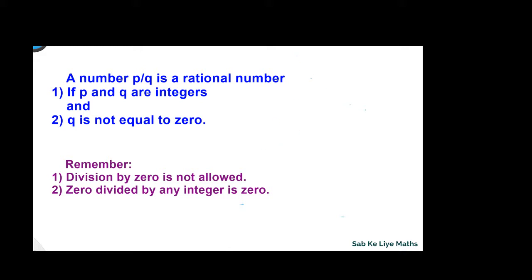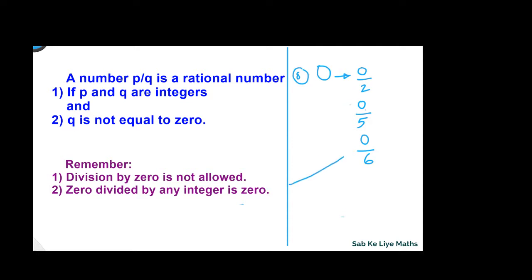Now let's take the example of 0. We can write 0 by 2, or 0 by 5, or 0 by 6. Note that 0 divided by any integer is 0. This is in the form P by Q, where P is equal to 0 and Q is equal to 5 or 6. Both are integers, and Q is not equal to 0. So again, this is a rational number. Conclusion: 0 is a rational number because we can write it in the form P by Q — as 0 by 2, 0 by 5, or 0 by 6.